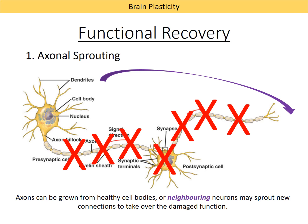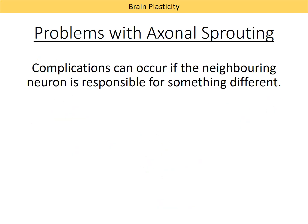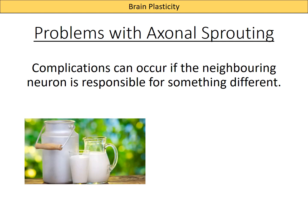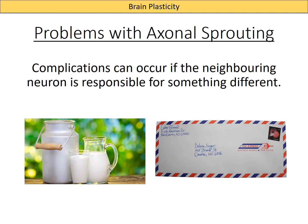This can cause complications. If the neighboring neuron that has sprouted the new connection is actually responsible for a different purpose, the resulting response might also get complicated. Using an analogy: if the milkman goes off sick and the postman decides to take over delivering your milk every morning, you might open your front door and find a bottle of milk with a letter stuffed in the top — because those two functions have got somewhat confused.